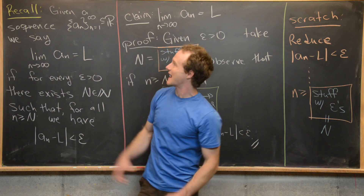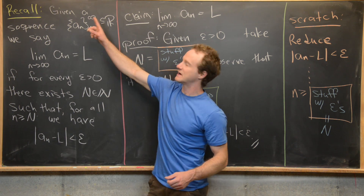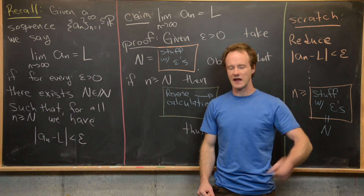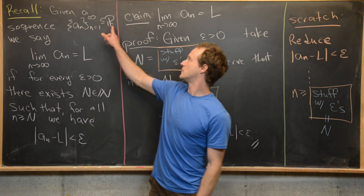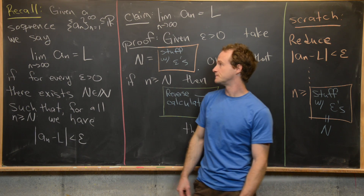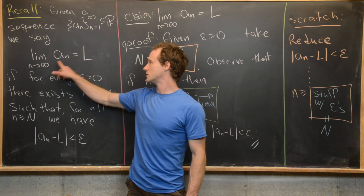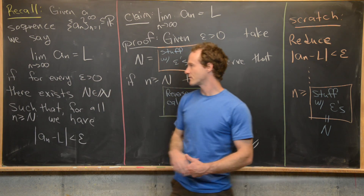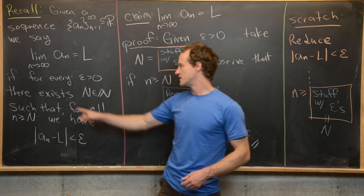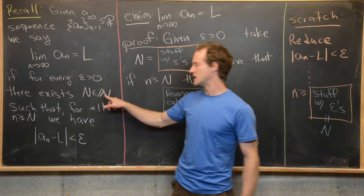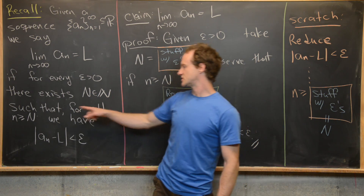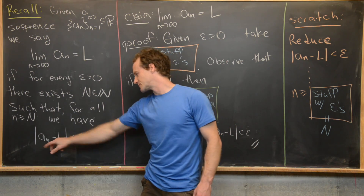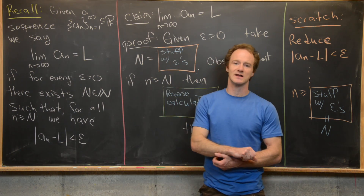Given a sequence a_n, n goes from one to infinity — an infinite list of numbers a1, a2, a3, a4, and so on — all real numbers. We say that the limit as n goes to infinity of a_n equals L if for every epsilon greater than zero, there exists a capital N in the natural numbers such that for all little n bigger than or equal to capital N, we have the absolute value of a_n minus L is less than epsilon.